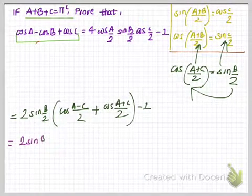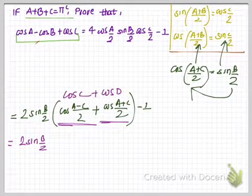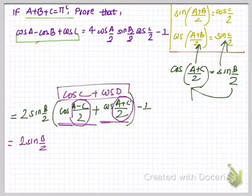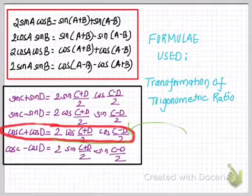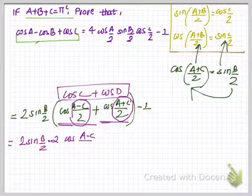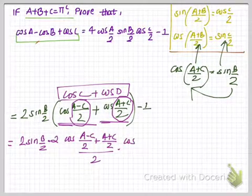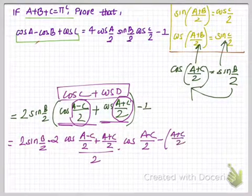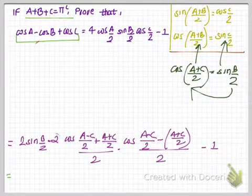Once again applying the sum-to-product formula cos C + cos D = 2 cos((C+D)/2) · cos((C−D)/2) to cos((A−C)/2) + cos((A+C)/2): with C = (A−C)/2 and D = (A+C)/2, we get 2 cos(((A−C)/2 + (A+C)/2)/2) · cos(((A−C)/2 − (A+C)/2)/2) − 1.